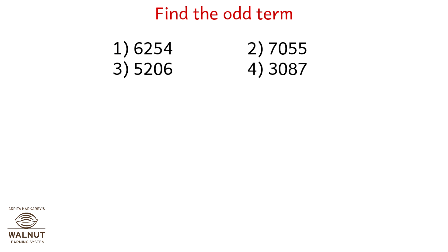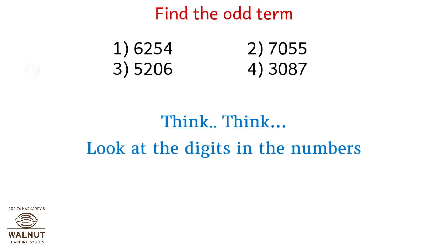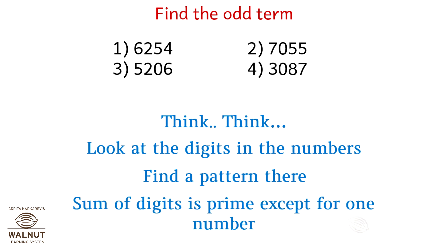Find the odd term. Look at the digits in the numbers. Can we find a pattern? Yes — the sum of the digits is prime except for one number, which is option 4.